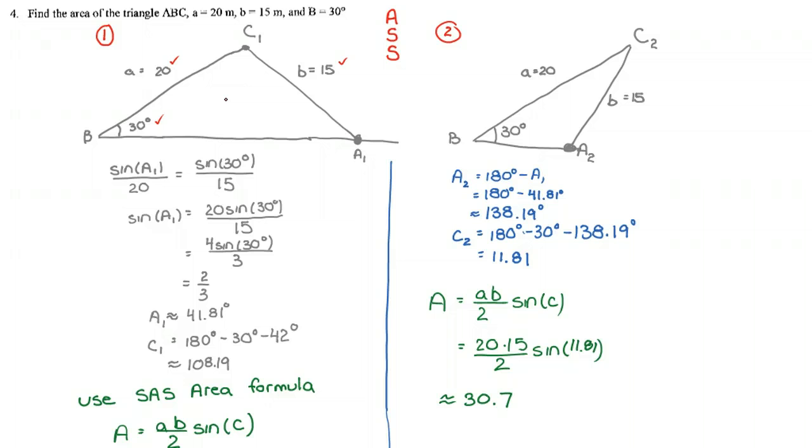So, the question becomes, how do we account for both of them? Let's start with case 1. I notice right away that I'm given an angle and a pairing side, so I'm going to apply sine law.